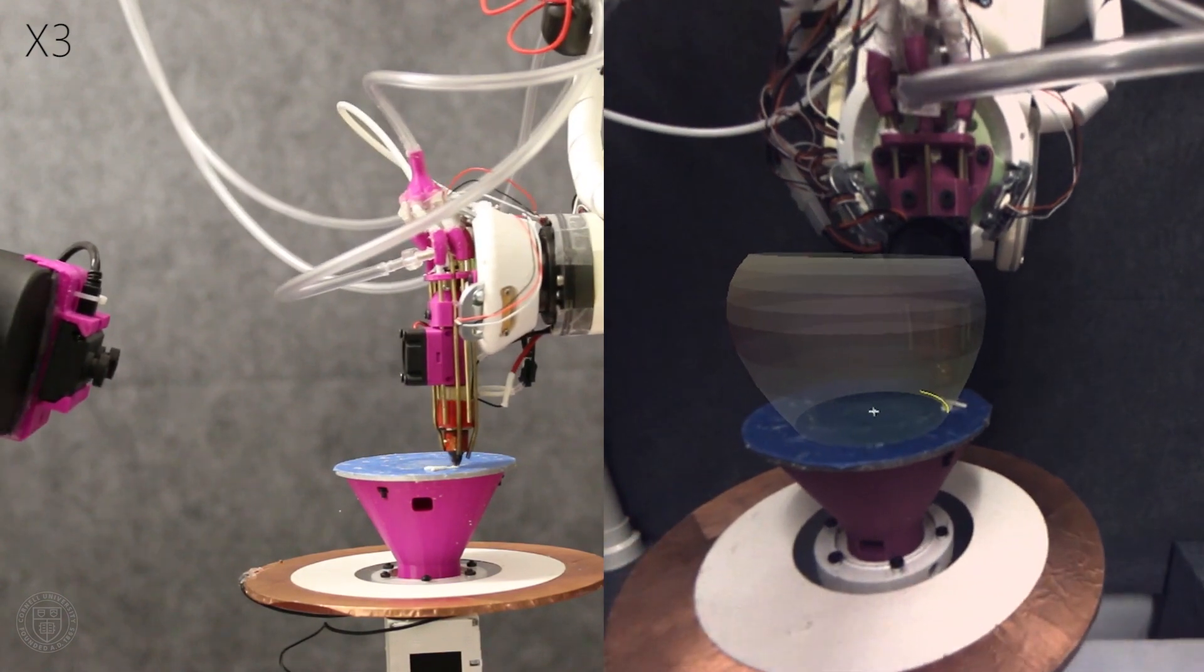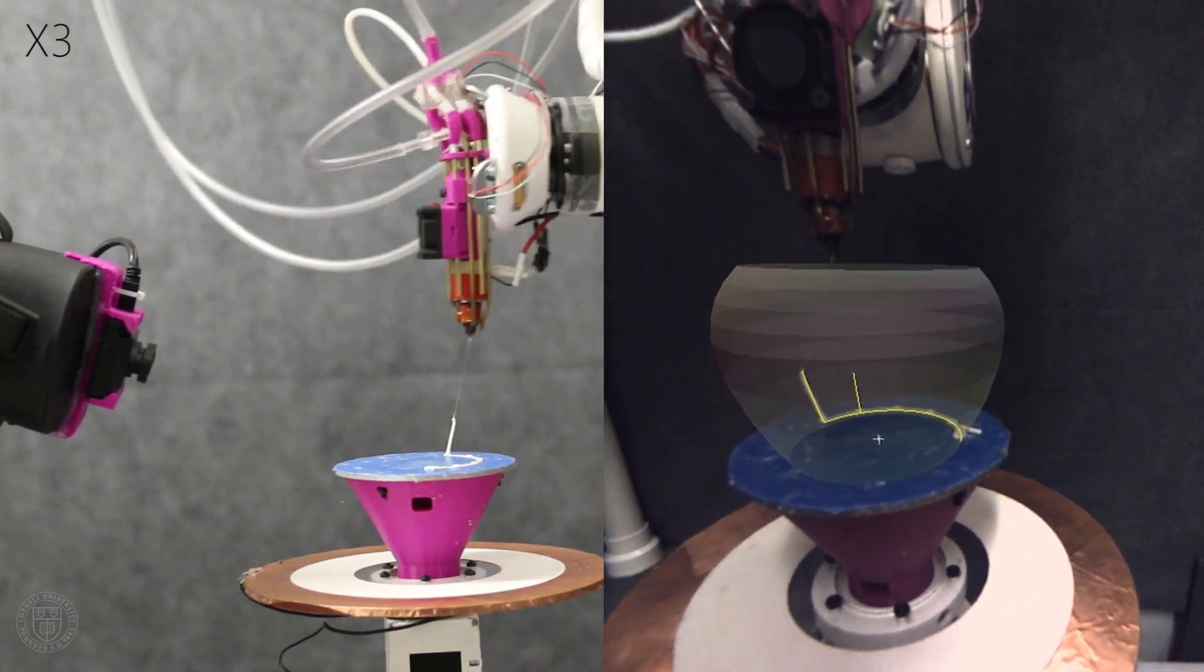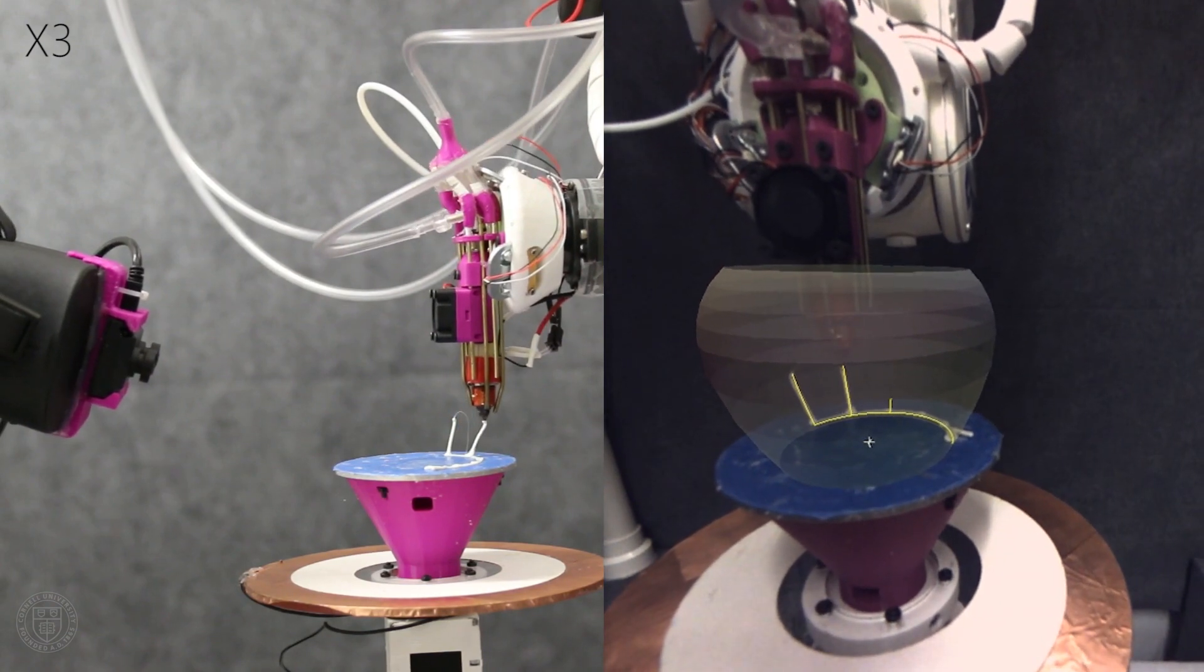After confirmation, the robot begins printing the wireframe structure of the model. The augmented reality rendering matches the printed wireframe closely.